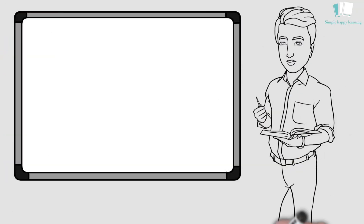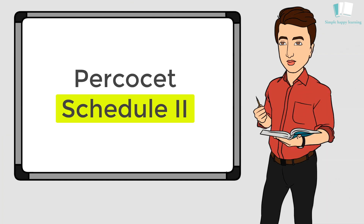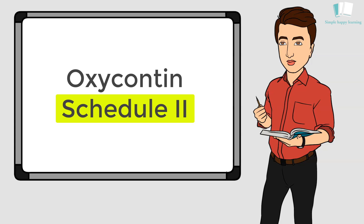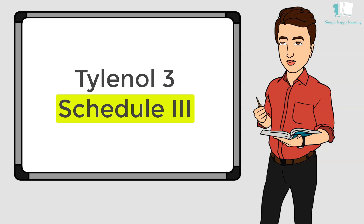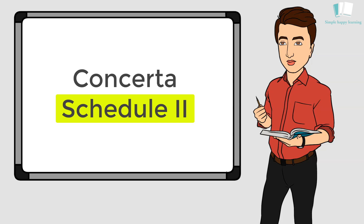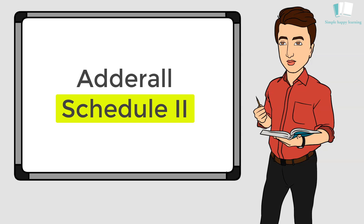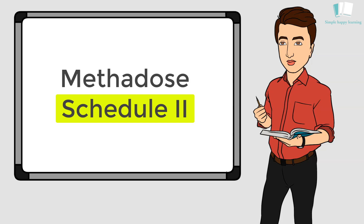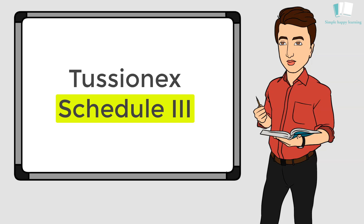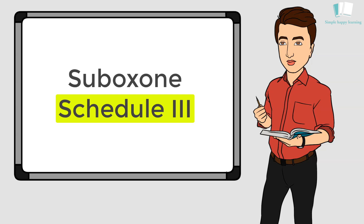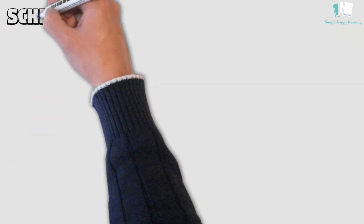Let's revise them all one more time: Ambien – Schedule 4, Percocet – Schedule 2, Vicodin – Schedule 2, Xanax – Schedule 4, Ativan – Schedule 4, Klonopin – Schedule 4, Valium – Schedule 4, OxyContin – Schedule 2, Soma – Schedule 4, Tylenol 3 – Schedule 3, Concerta – Schedule 2, Lyrica – Schedule 5, Restoril – Schedule 4, Adderall – Schedule 2, Duragesic – Schedule 2, Methadone – Schedule 2, Topamax – Schedule 3, Adipex – Schedule 4, Lunesta – Schedule 4, Suboxone – Schedule 3, Vyvanse – Schedule 2.